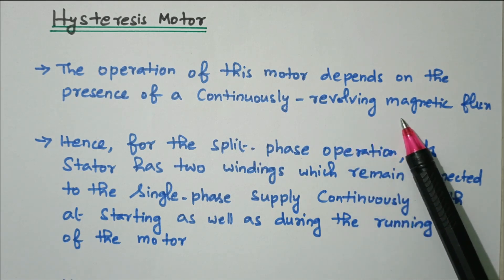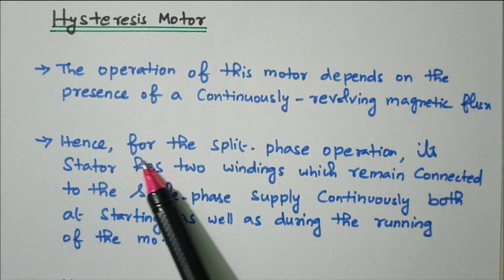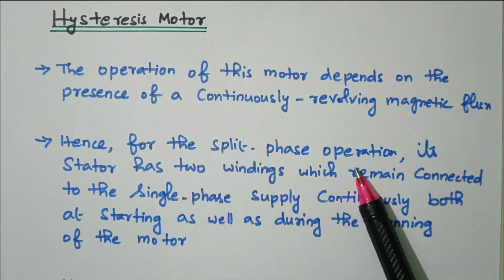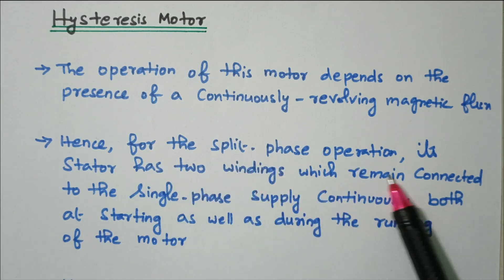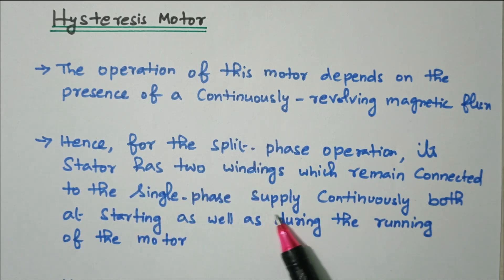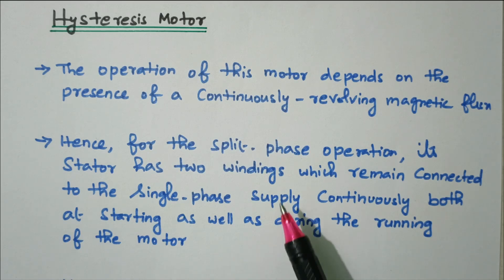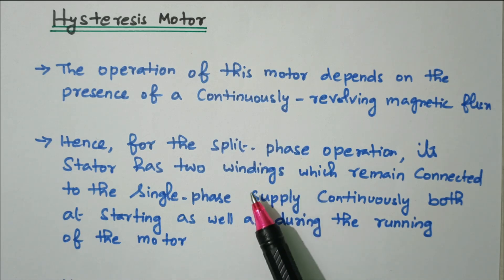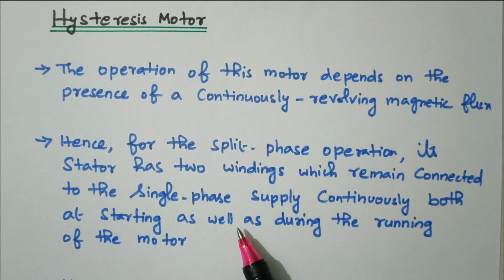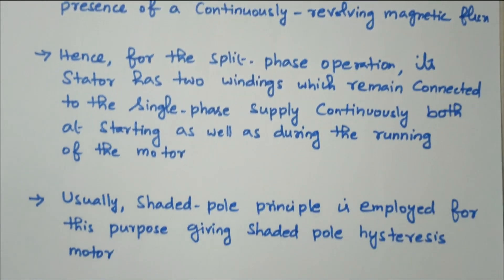We need a minimum of two phases with phase displacement. Hence for the split-phase operation, we are using split-phase operation. The stator has two windings which remain connected to the single-phase supply continuously, both at starting as well as during the running of the motor. We will see how we are getting the phase difference.